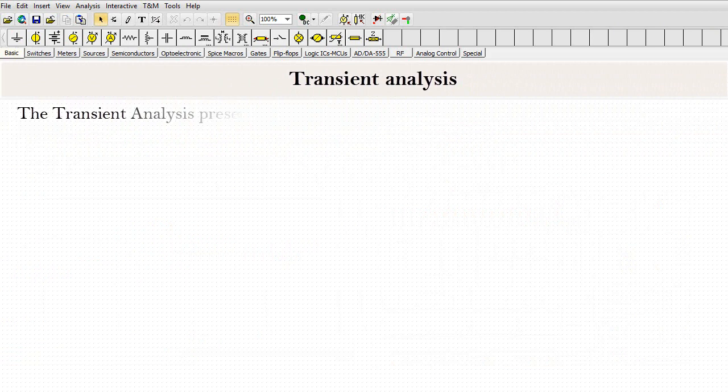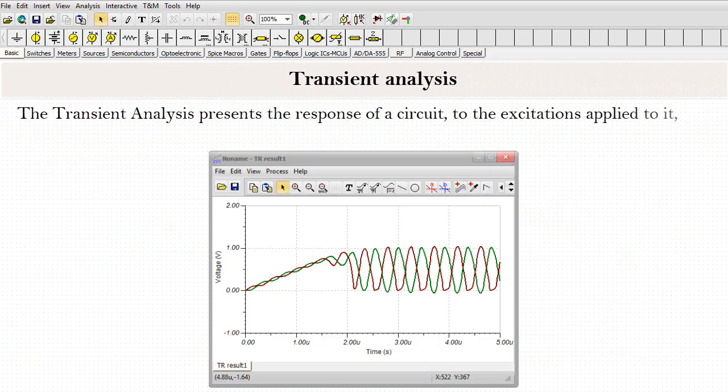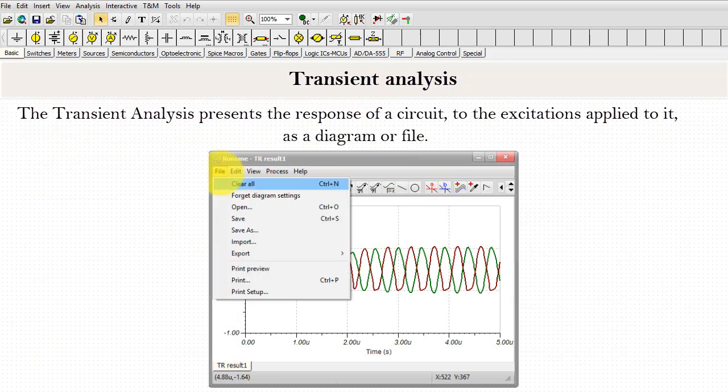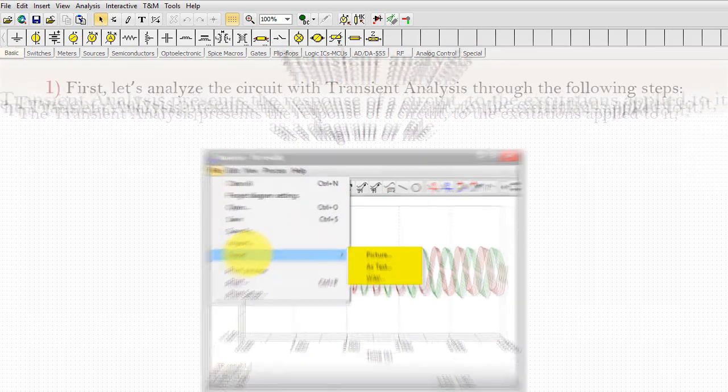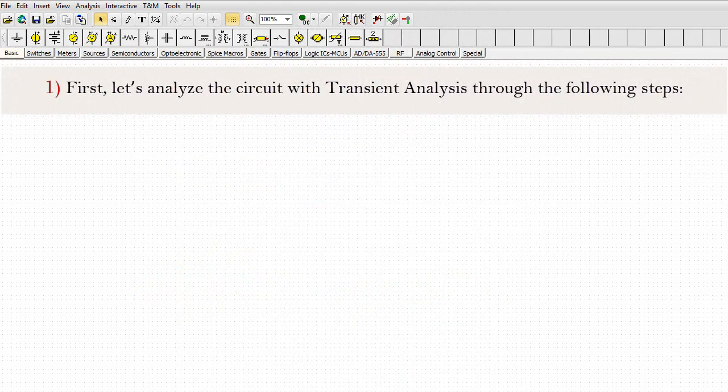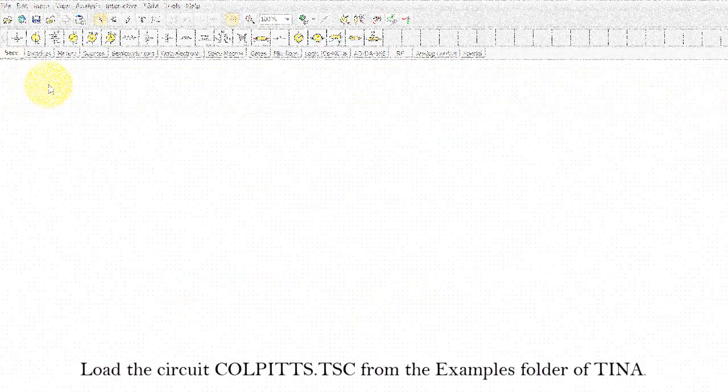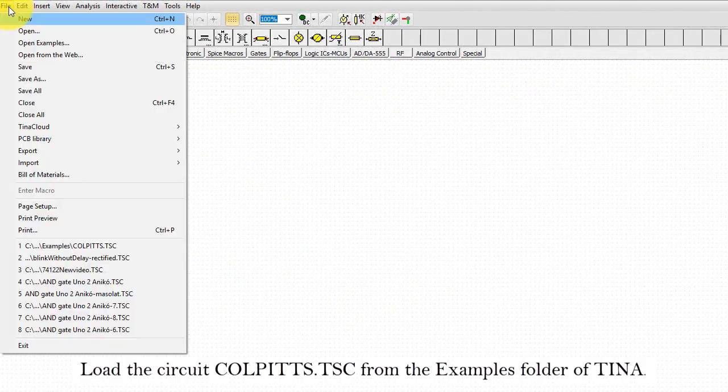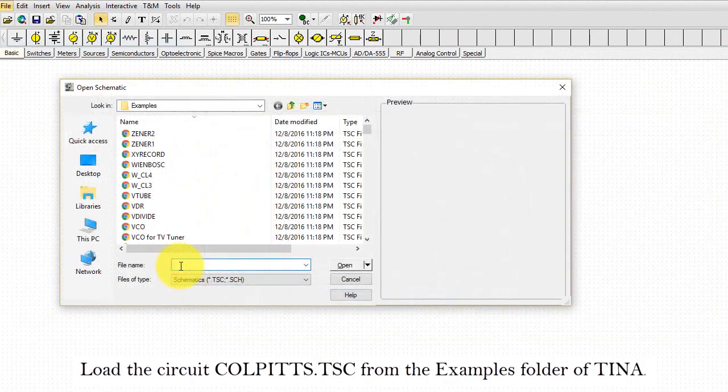Transient analysis. The transient analysis presents the response of a circuit to the excitations applied to it as a diagram or file. First let's analyze the circuit with transient analysis through the following steps. Load the circuit colpits.tsc from the examples folder of TINA.